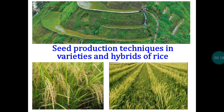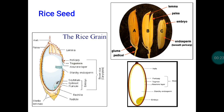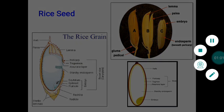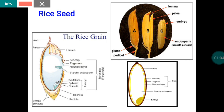Before getting into production-related data, I want to give you some information about seed structure. The rice seed is a monocot that has only one cotyledon, which is fully utilized by the endosperm during seed development, resulting in a reduction in the size of the cotyledon. It is available in the seed as the scutellum, placed between the embryo and the endosperm. It is an albuminous kind of seed, surrounded by the lemma and palea.